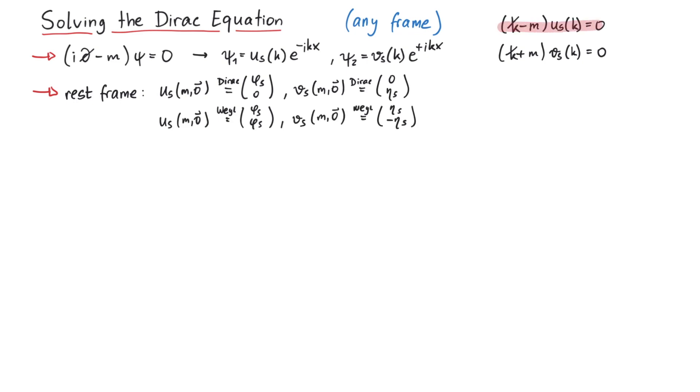But let's return to these defining equations again. We will now use the following trick. We assume that u and v are given in terms of their rest frame solutions as k slash plus m times u and k slash minus m times v. These states have to be normalized, but that will be the topic of a different video. But anyway, why does this work?